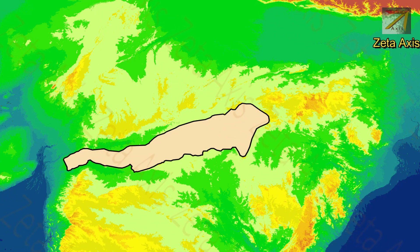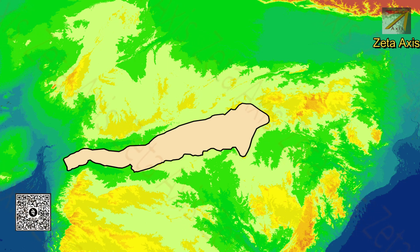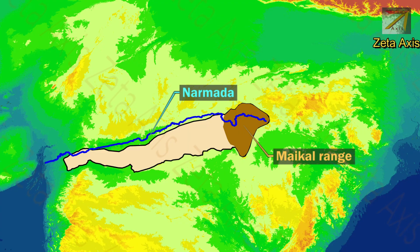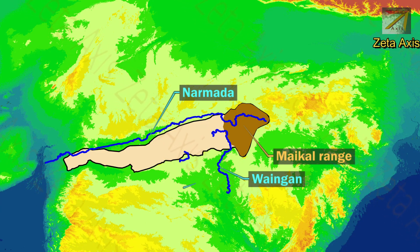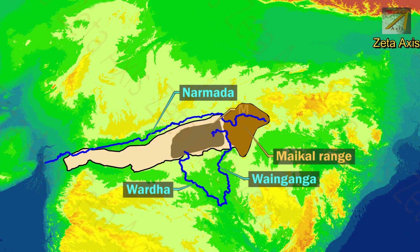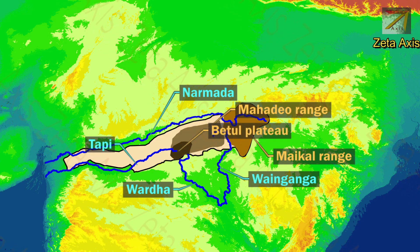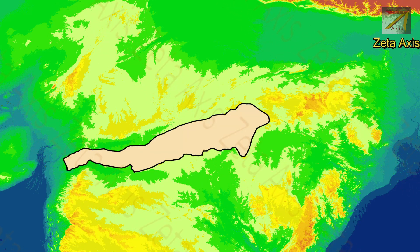Now let's see some important rivers flowing through Satpura ranges. The Narmada river forms the northern margin of the Satpura range. The Wainganga and Wardha rivers originate from Mahadeo hills. The Tapti river originates from the Betul Plateau of Satpura ranges.